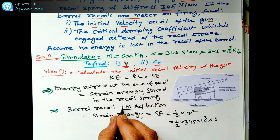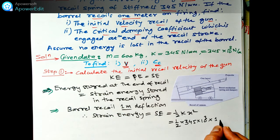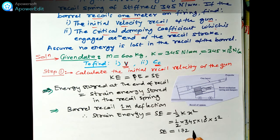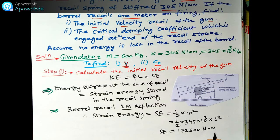The deflection x = 1 meter. Substituting: SE = ½ × 345 × 10³ × 1² = 172,500 newton-meter. This is the value of strain energy.